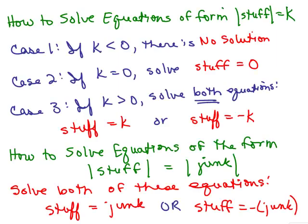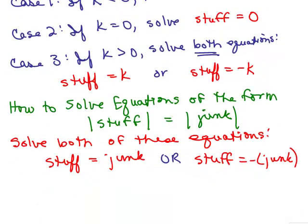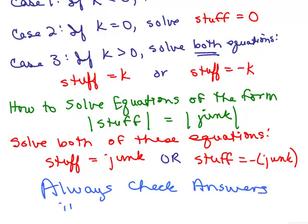Here's a summary of all the problems solved in parts 1 through 5. We covered how to solve equations of the form absolute value of stuff equals k, and now equations where one absolute value equals another absolute value — where the two expressions inside are either equal to each other or opposites. The main takeaway across all of these is to always check your answers in the original problem.